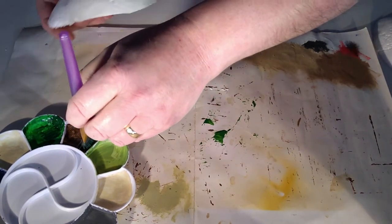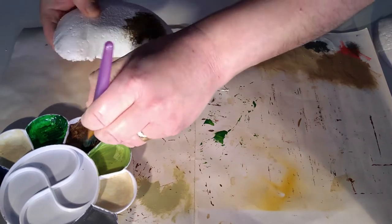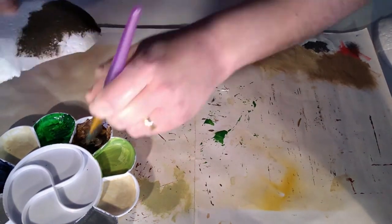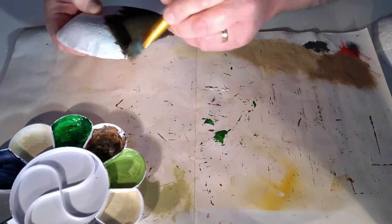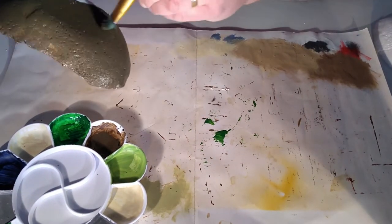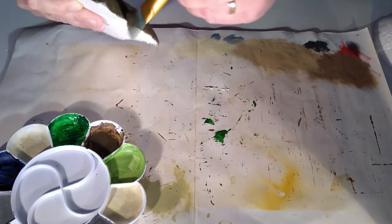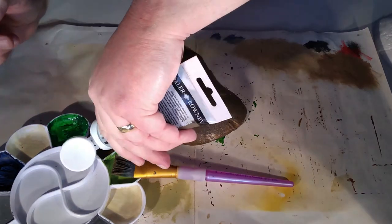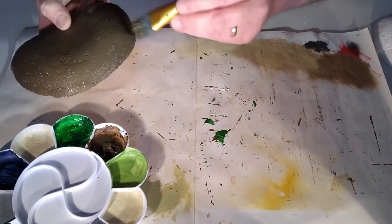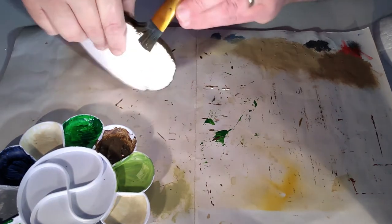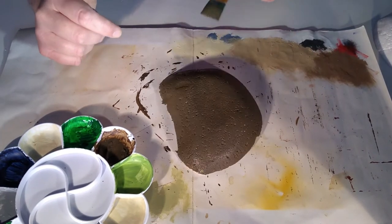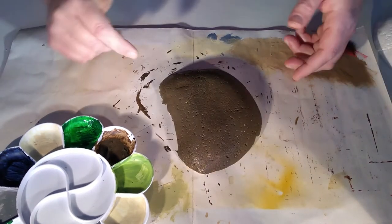This will take a minute or two, so I'll just fast forward. Once you've given your hill a good coat of paint and made sure there's no white showing through, leave it to dry. If the polystyrene is still showing through in places, give it a second coat of paint.